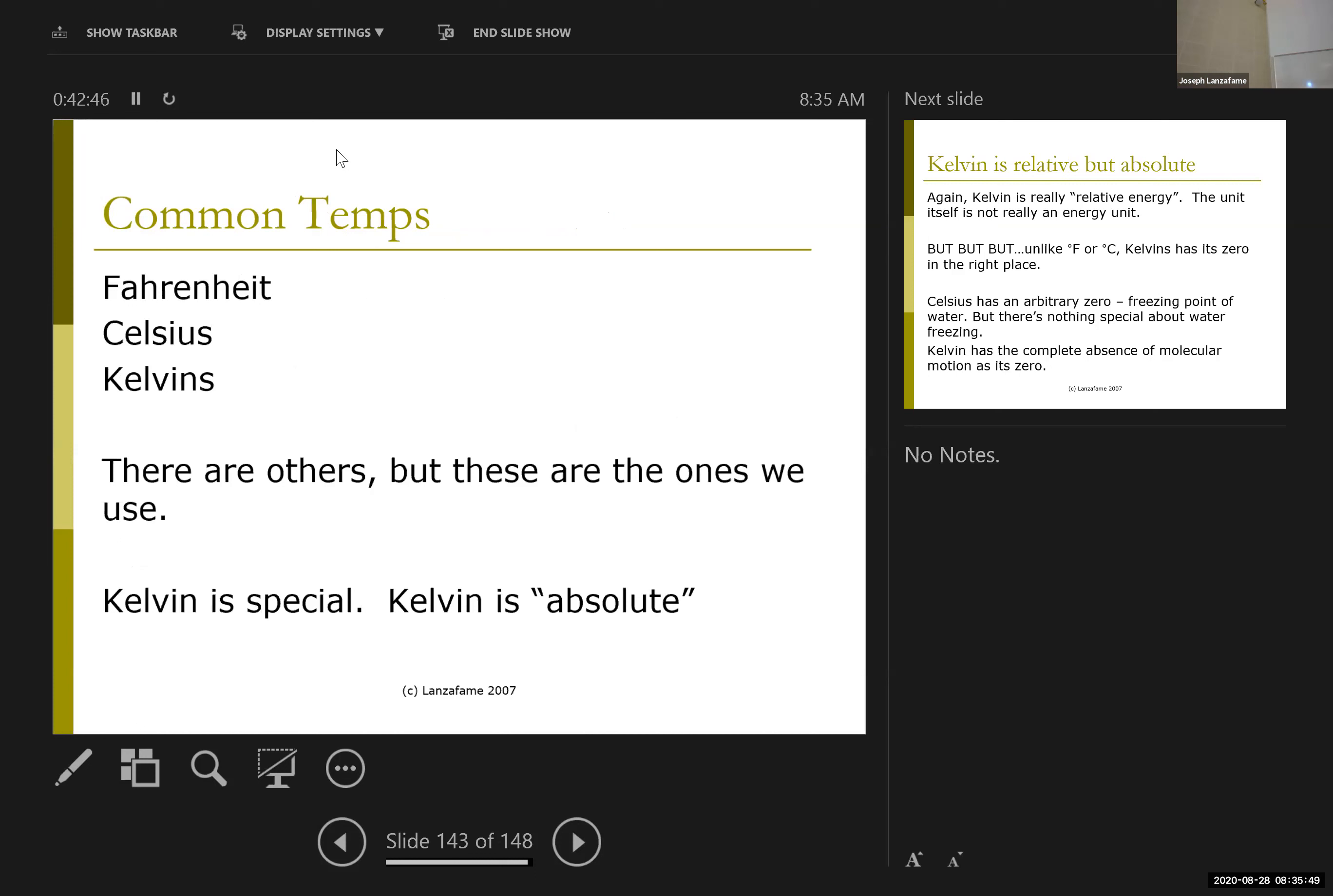The three most common temperature scales, as you probably know, are Fahrenheit, at least in the US, because we refuse to go metric. Celsius, for most of the rest of the world because they want metric. And then Kelvins, which is one of several scientific temperature scales referred to as absolute temperature scales. And for most things, Fahrenheit, fine. Because, again, if I care about relatively hot or relatively cold, that's all I need to know.